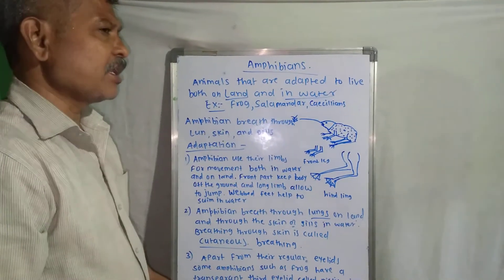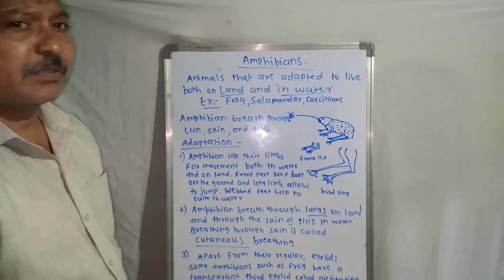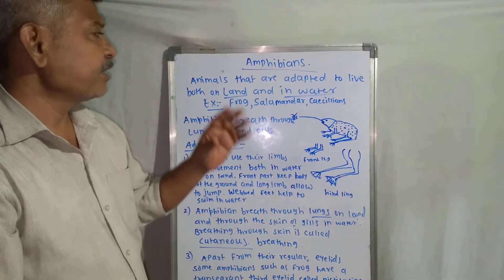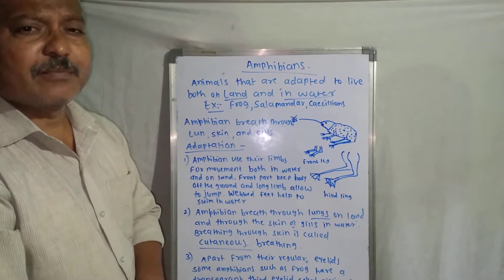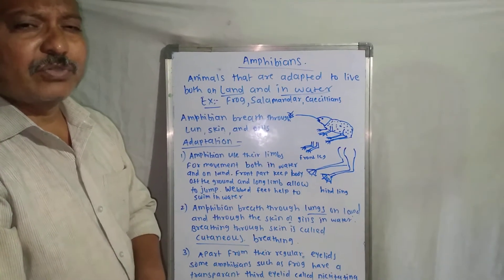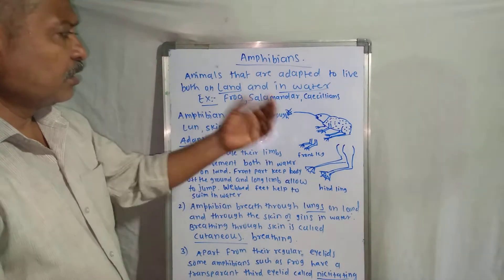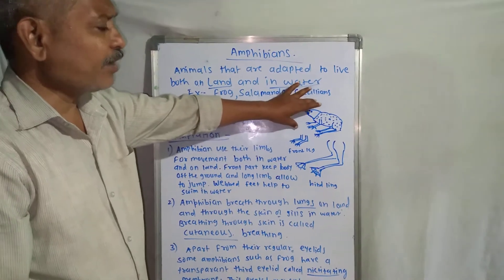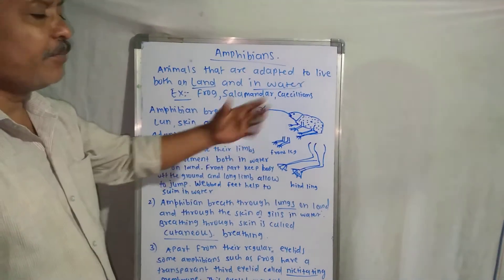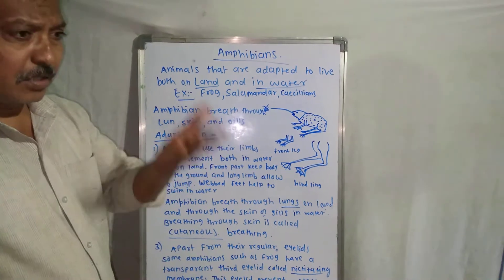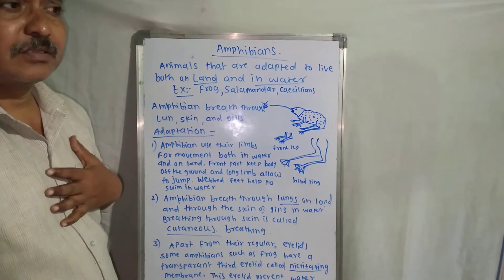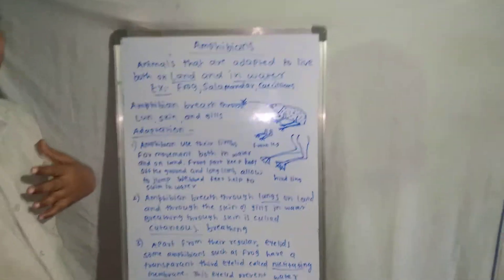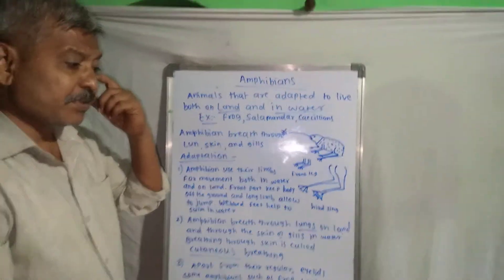Inside the water, the frog can also swim very well. So the frog can adapt to live in water as well as on land. For this purpose, the frog makes some changes in its structure and functional behavior. On the land, the frog breathes through the lungs.